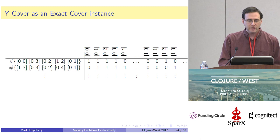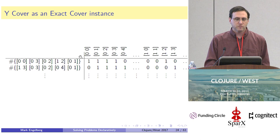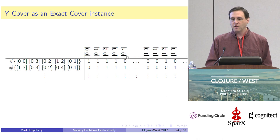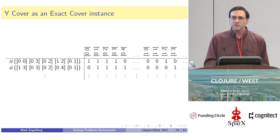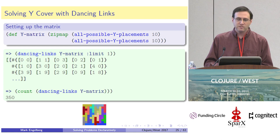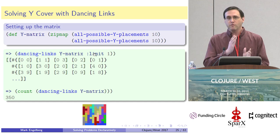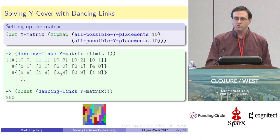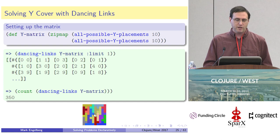One of the input formats for the dancing-links function is a mapping from row labels to sets of column labels. In this instance, if you take a row label and map it to a set of the column labels with ones in it, that's the same as the original set. So building that matrix representation is incredibly convenient — it's as simple as doing a zip-map of all the placements with itself. We pass it to the dancing-links function, optionally with a limit keyword to limit the number of solutions. It spits out one solution, and a little visualization function produces the picture I showed at the beginning of the talk. We can also count how many solutions there are.